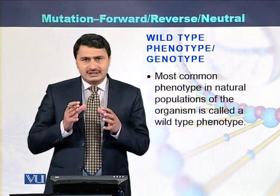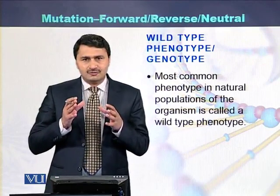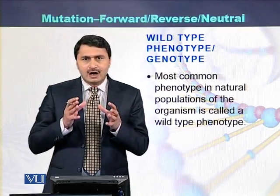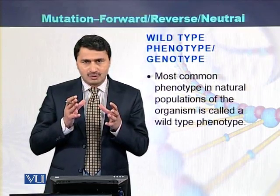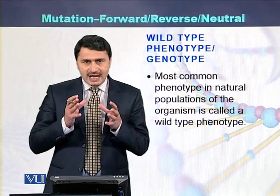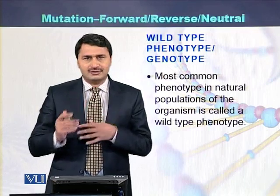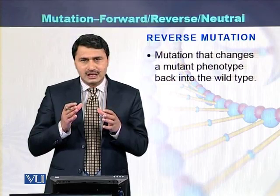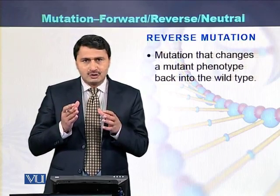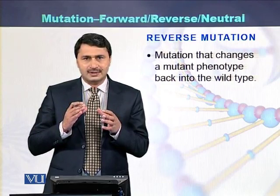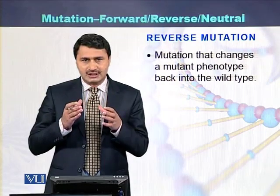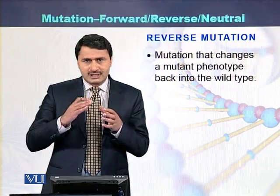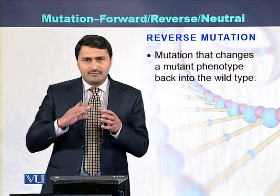Wild type is such a type in which we see the most common phenotype which occurs in the organisms. If a phenotype is the most common in the organisms, that phenotype is called the wild type phenotype. On the other hand, reverse mutation is such a mutation that converts the mutated phenotype into the wild type phenotype — with the help of that mutation, if there is a mutated phenotype, reverse mutation converts it back into the wild type phenotype.